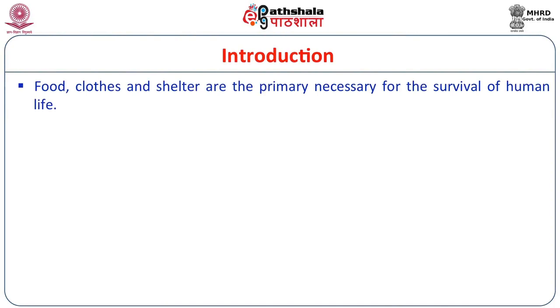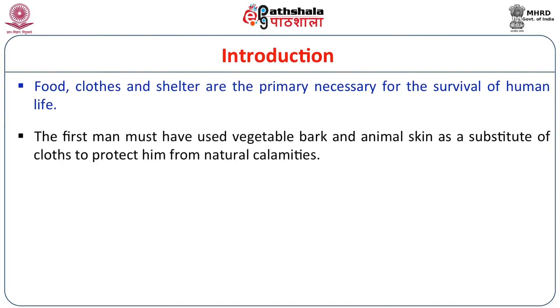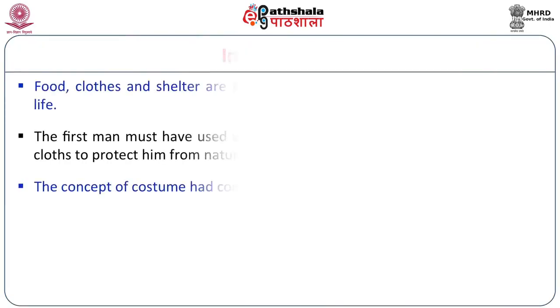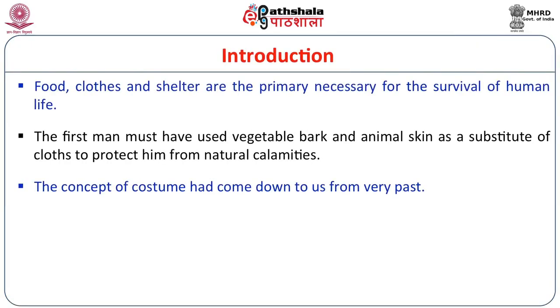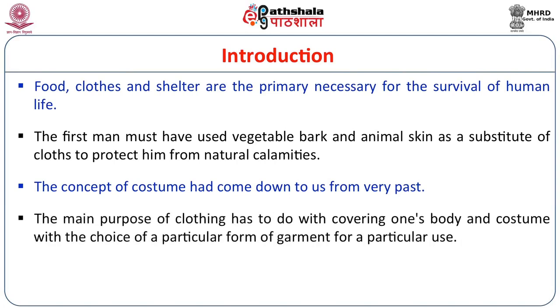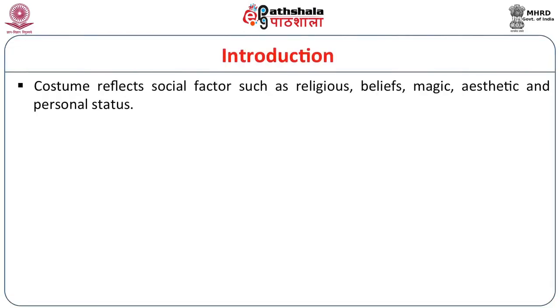Food, clothes and shelter are the primary necessity for the survival of human life. The first man must have used vegetable bark and animal skin as a substitute for clothes to protect himself from natural calamities. As mentioned before, there was a shift from use of natural things to use of cotton and silk. The concept of costume had come down to us from the very past, and the main purpose of clothing has to do with covering one's body. These changes happen as there is progress in society — from a very early society, as it becomes more complex, we find a change in dressing habits. Costume also reflects social factors such as religious beliefs, magic, aesthetics and personal status.